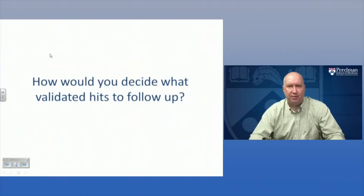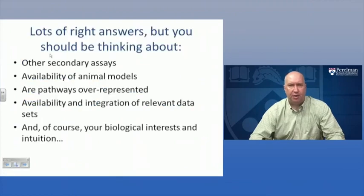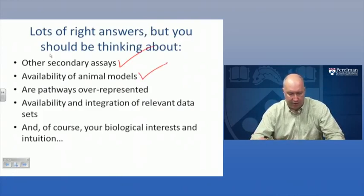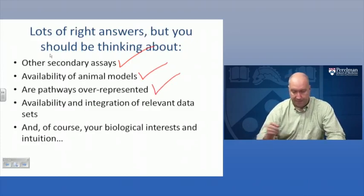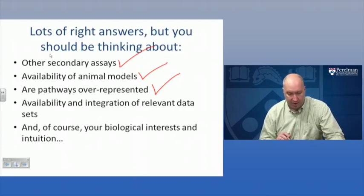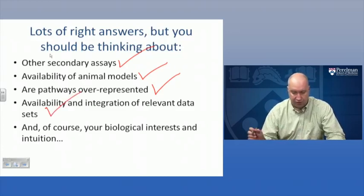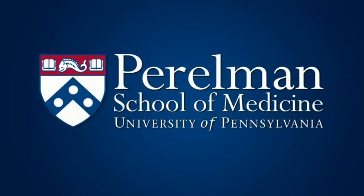How would you decide what validated hits to follow up? There are many right answers, but you should think about the availability of secondary assays, whether there are animal models you could exploit, whether particular pathways are overrepresented, and the availability of other data sets you could integrate to focus on particular genes. Of course, you'll also be influenced by your biological interests and intuition.